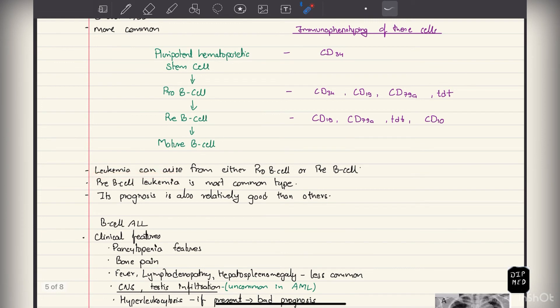Leukemia can arise from either pro-B cell or pre-B cell. Pre-B cell is most common type and its prognosis is relatively good compared to the others, that is pro-B cell and T cells.